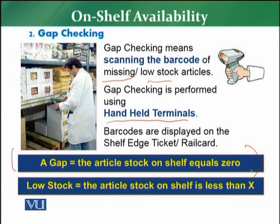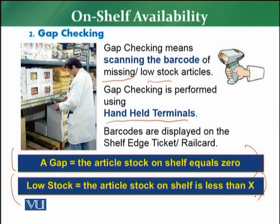If stock is available on the shelf but it is less than the Daily Mean Sales (DMS), then the article is considered a low stock article. For example, if an article normally sells 10 units in a day, you should have at least 10 units on hand. If delivery is after 7 days, you need at least 70 units at all times. If the article has less than 70 units, it is considered low stock — below the required defined parameter.